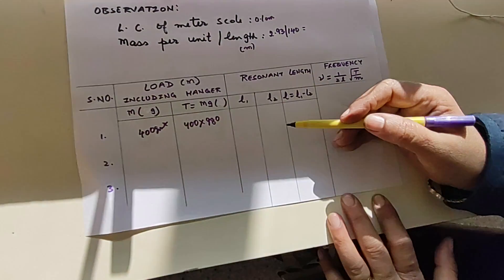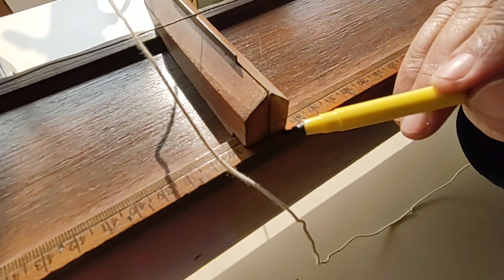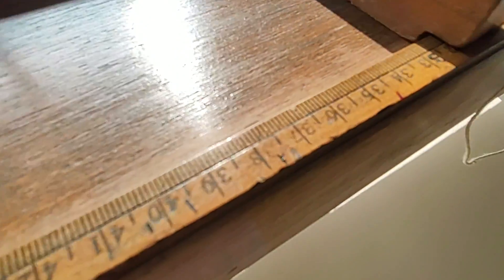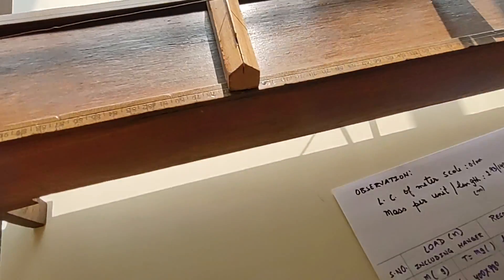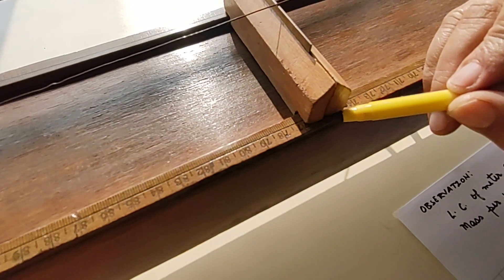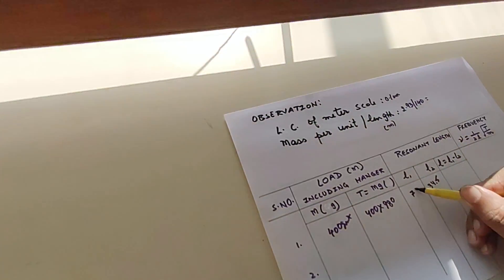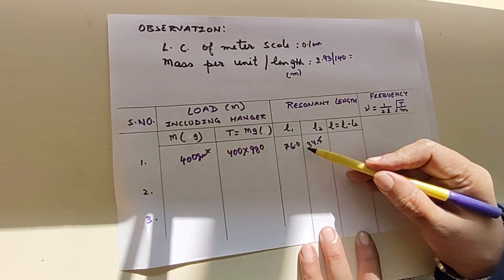L1 and L2 are the positions of the two bridges on the scale. You identify the central point of each bridge where it coincides on the scale and mark that position. As you can see, the first position L2 reads 34.5 centimeters and L1 reads 76.0 centimeters. Since the least count is 0.1, write readings to one decimal place.